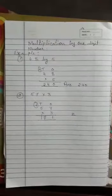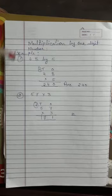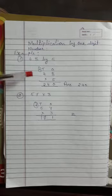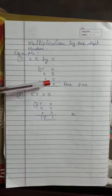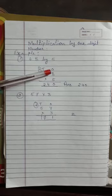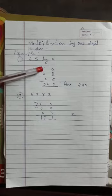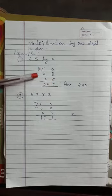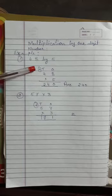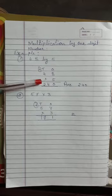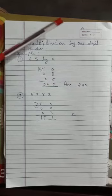Multiplication by 1 digit number. 48 multiply by 5. First of all, we arrange the numbers. Now you multiply the first digit. 5 eights are 40. From 40 write 0 and carry 4. Now multiply the tens digit by 5. 5 fours are 20. Add carry 4 to 20 making 24. Write it here. 240 will be the answer.